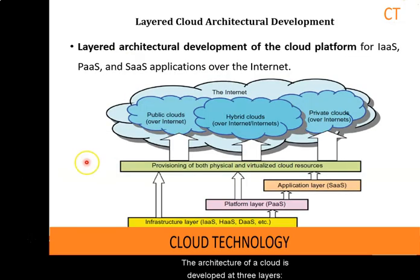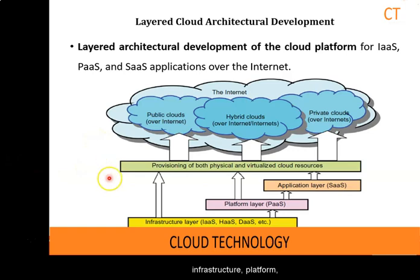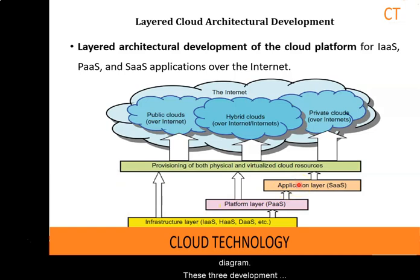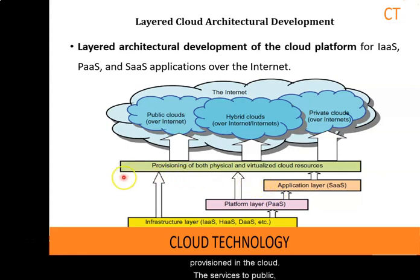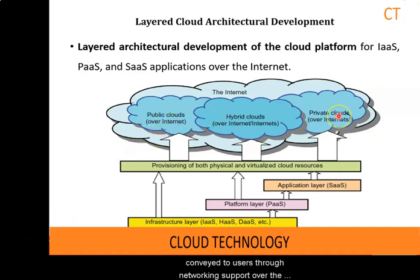The architecture of a cloud is developed at three layers — Infrastructure, Platform and Application — as demonstrated in the diagram. These three development layers are implemented with virtualization and standardization of hardware and software resources provisioned on the cloud. Services to public, private and hybrid clouds are conveyed to users through networking support over internet and intranets.